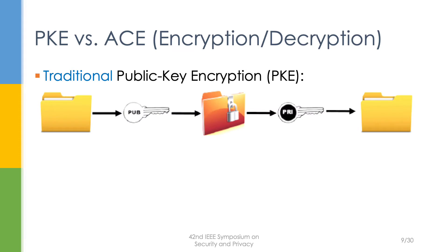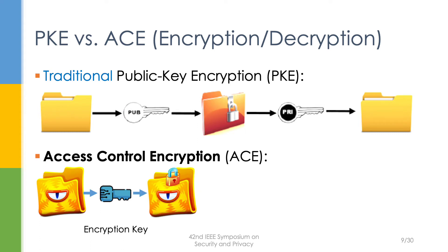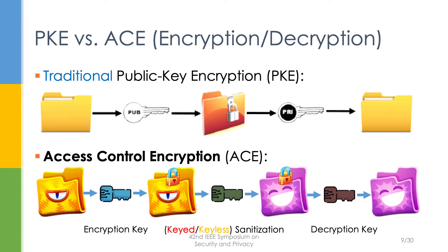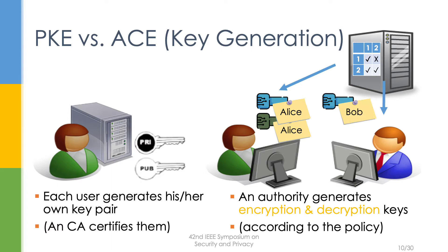In ACE, unlike traditional public key encryption, one actually needs to be granted an encryption key to encrypt. This ciphertext will be sent to a sanitiser, the sanitiser will apply the sanitisation process, and the resulting sanitised ciphertext will be sent to the receiver, who then decrypts. It is more desirable for the sanitisation process to be keyless, since we do not want to store a secret sanitisation key in a machine that is practically always online. In ACE, a single trusted authority generates both the encryption key and the decryption key according to the access control policy for different users — so there will be an encryption key and decryption key for Alice, and likewise for Bob.